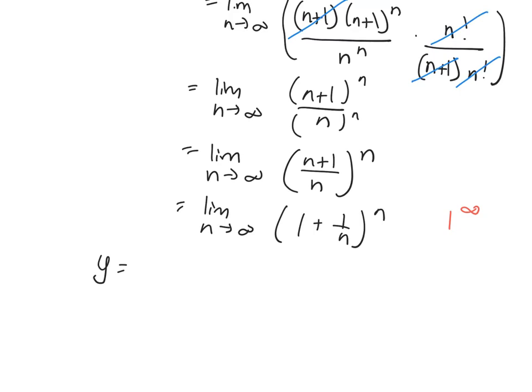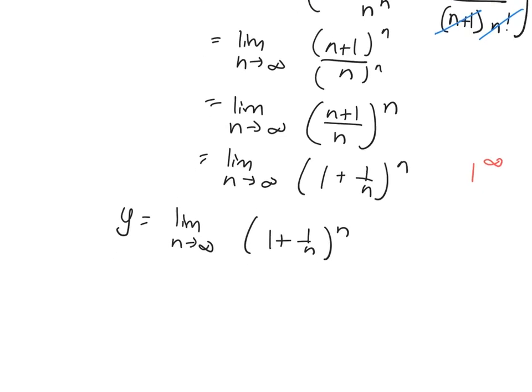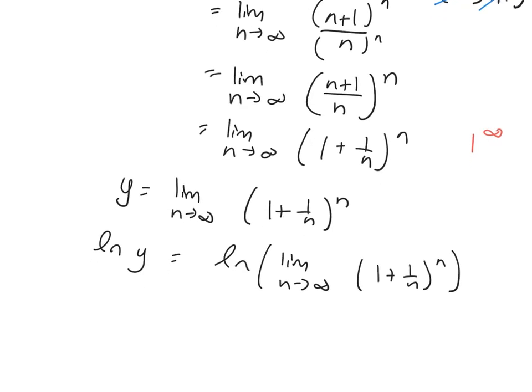So I'm going to call this limit y. And my issue is the exponent. I have a problem with having the n in the exponent. So what you're going to do is you're going to take the natural log here of both sides. Remember, limits will bypass continuous functions. So I can now interchange these two things, the ln and the limit.